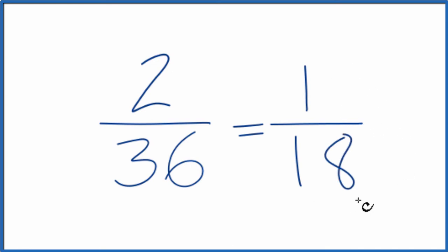And we can't reduce this any further. So we've simplified 2 over 36 down to 1 over 18. These are equivalent fractions. 1 divided by 18 and 2 divided by 36, you get the same value. It's just that we've simplified or reduced 2 over 36 down to 1 over 18.